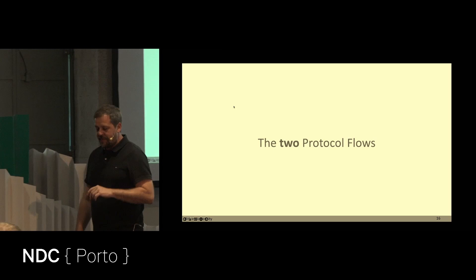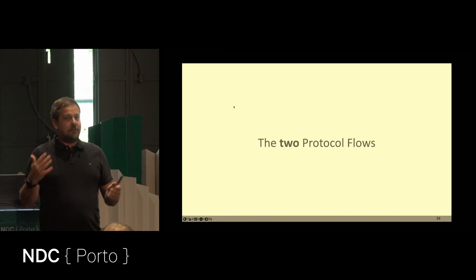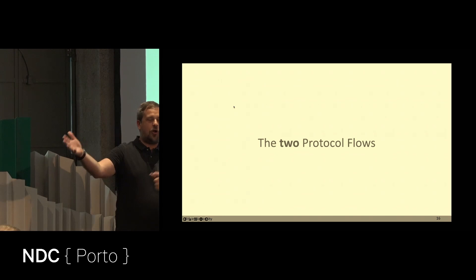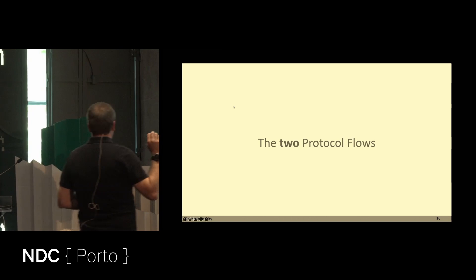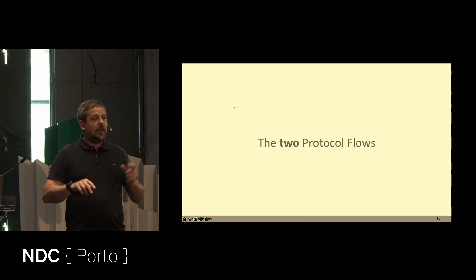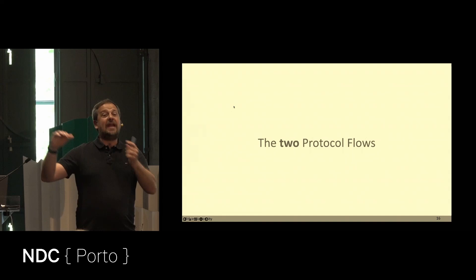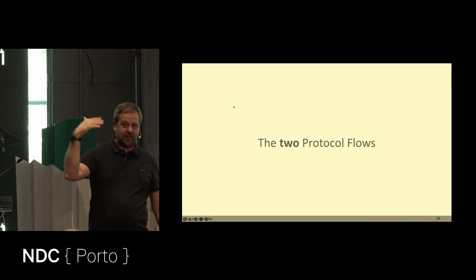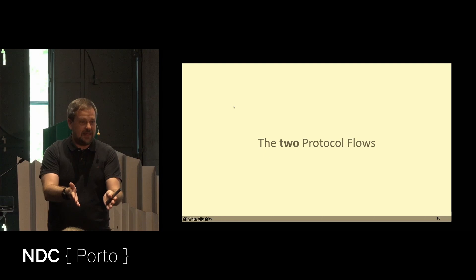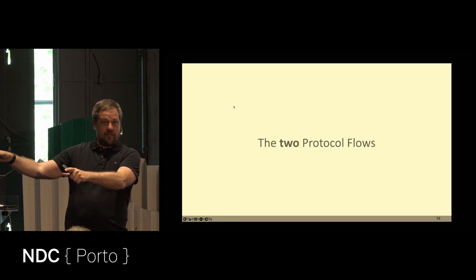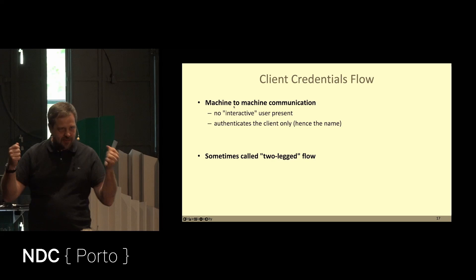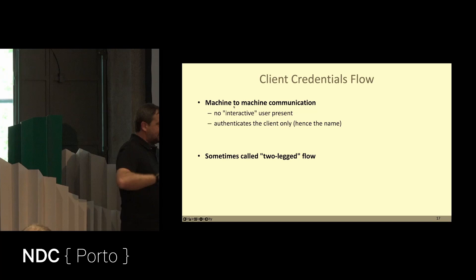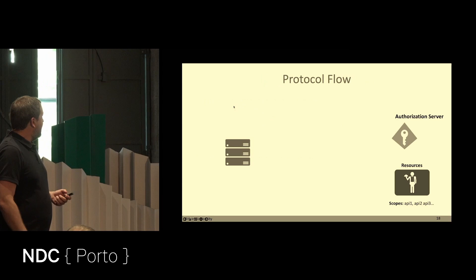The original spec had several what they call protocol flows — meaning how a specific type of application talks to the authorization server. Ten years later, we found out we only really need two, because it all boils down to two types of applications: non-interactive applications like server-to-server, batch processing, and message queuing; and interactive applications — everything else that has a user in front of it, in the browser or on a mobile device. In OAuth 2.1, they boiled it down to exactly that. Let's start with the simpler one: machine-to-machine communication, where no user is present and two machines talk to each other, but the API still needs authentication.